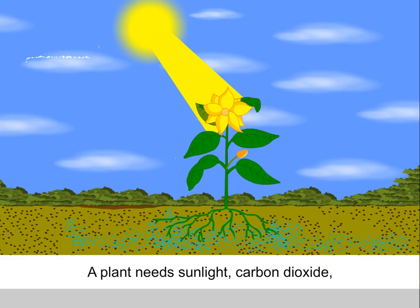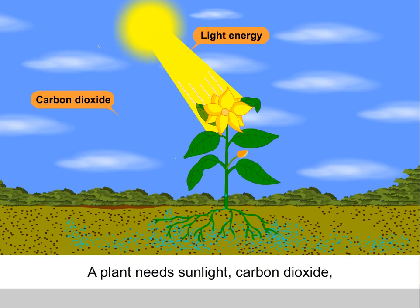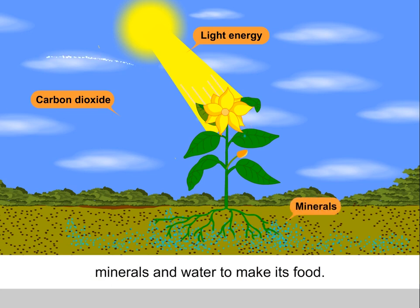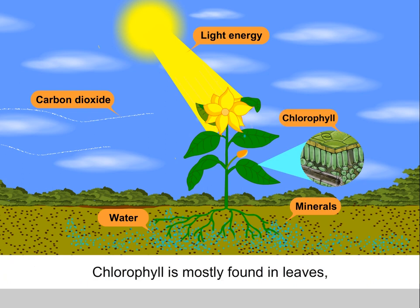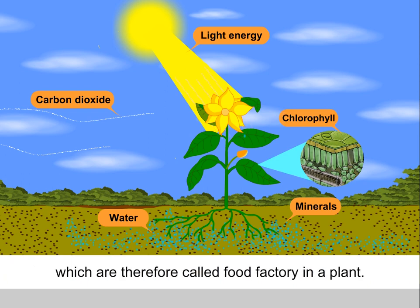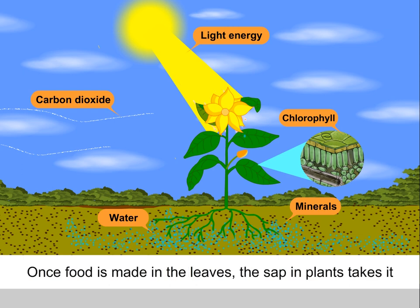A plant needs sunlight, carbon dioxide, minerals, and water to make its food. For this, a green substance called chlorophyll uses solar energy. Chlorophyll is mostly found in leaves, which are therefore called the food factory of a plant.